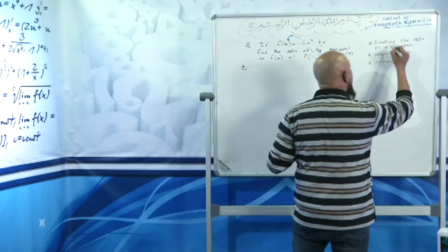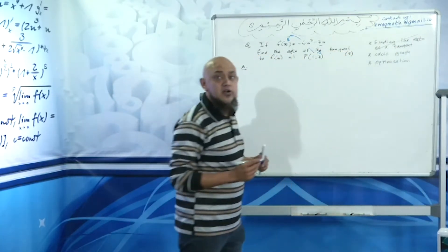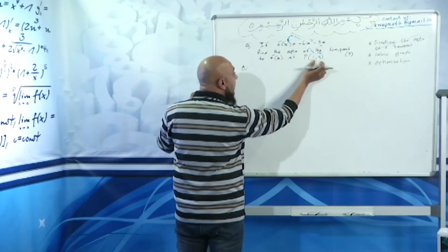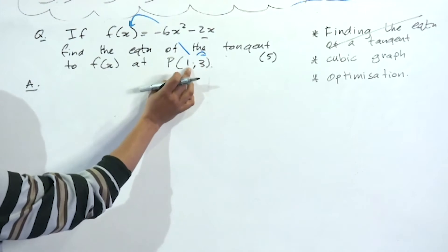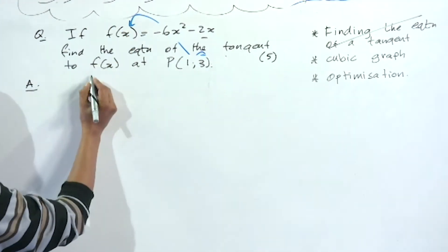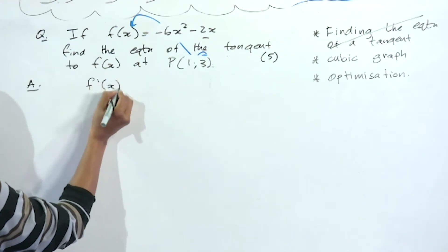We've got an x and a y. Do I need to substitute x in to get y? No, so I can go directly to the derivative. f'(x) = -12x - 2.